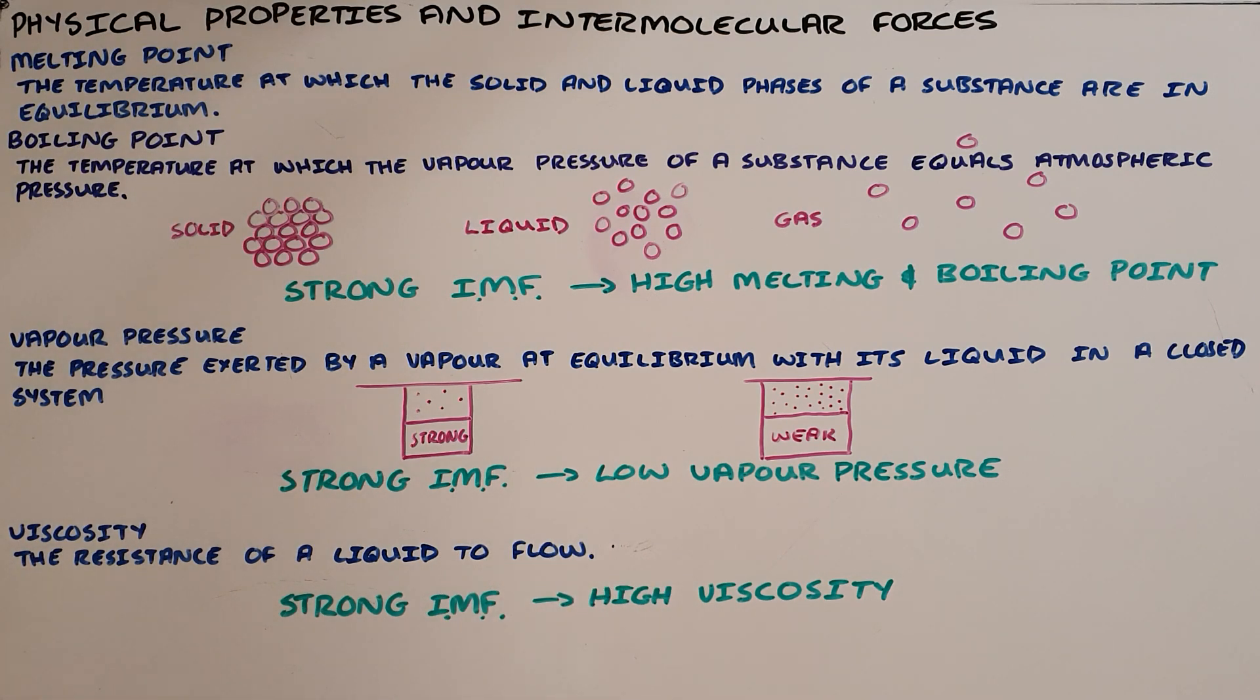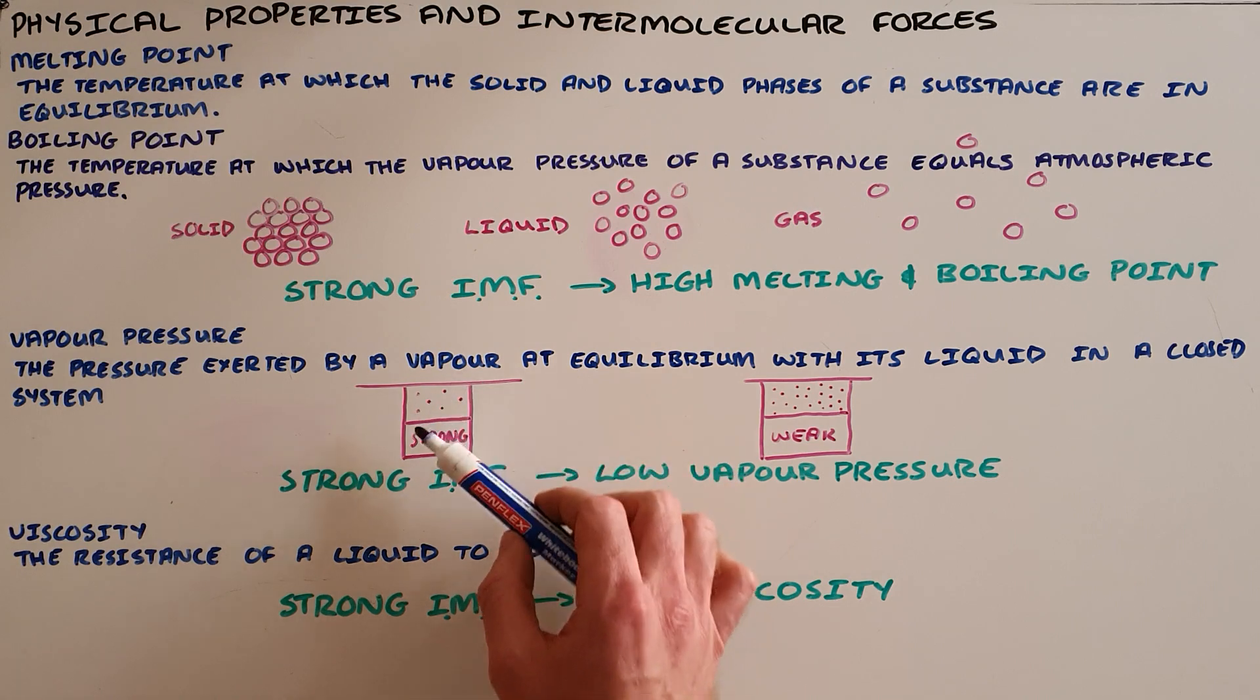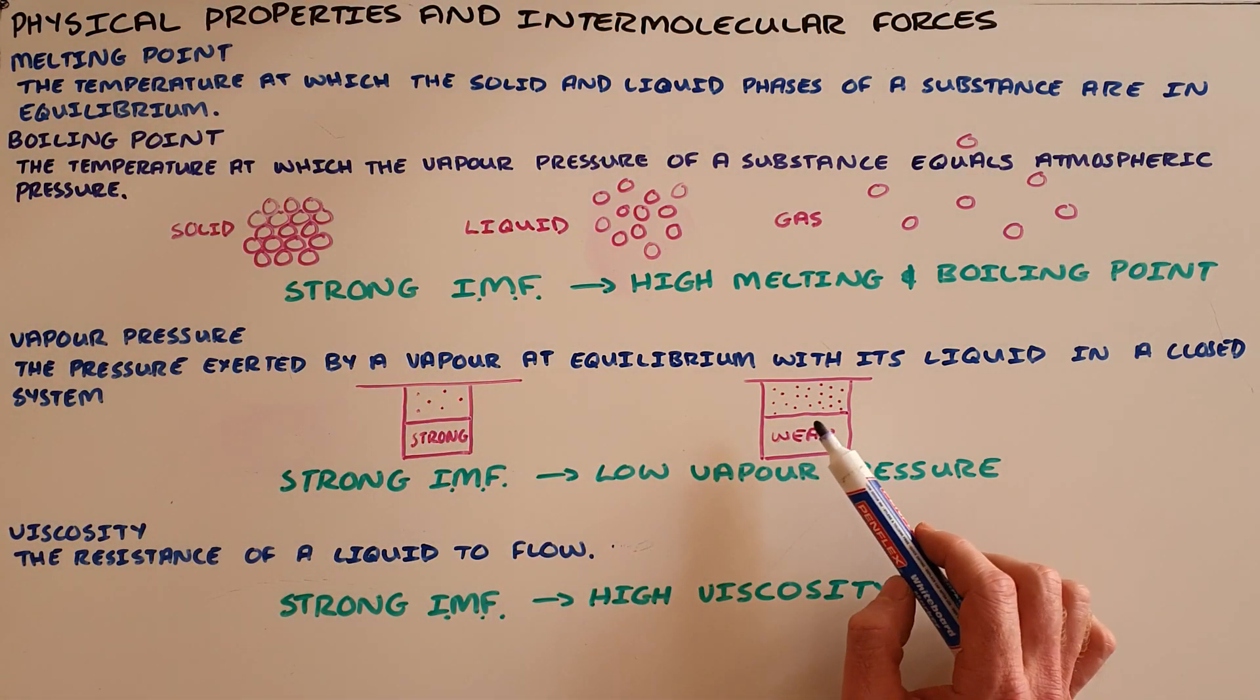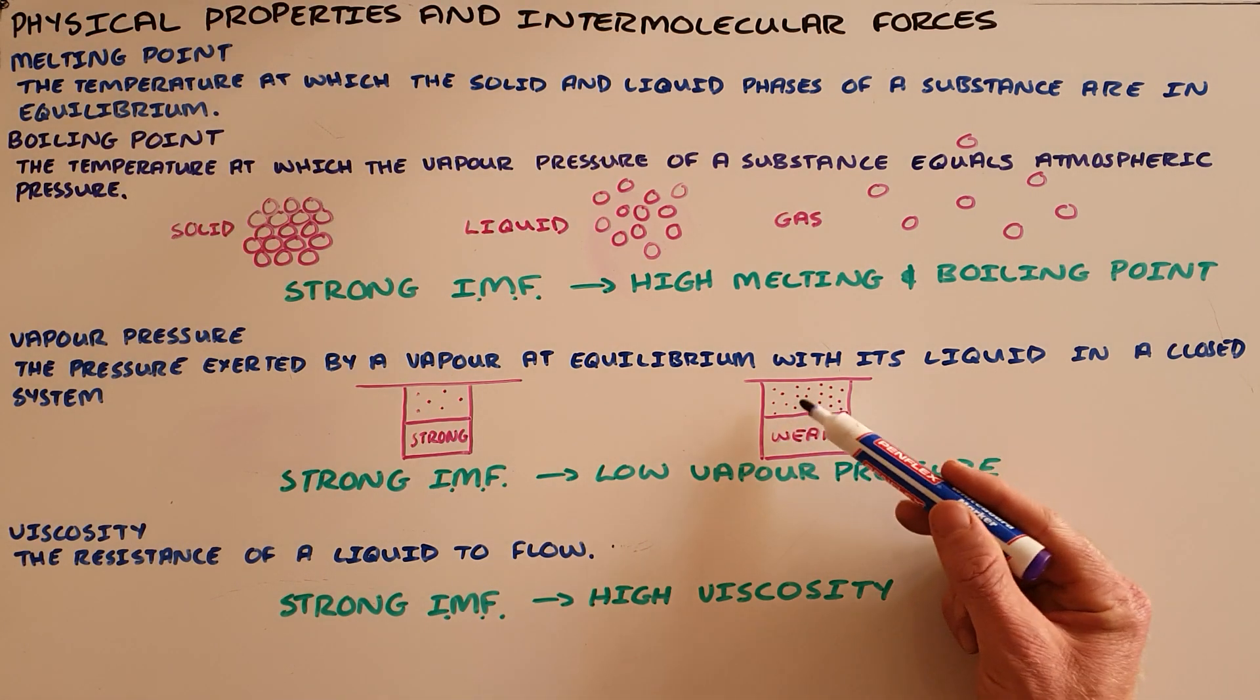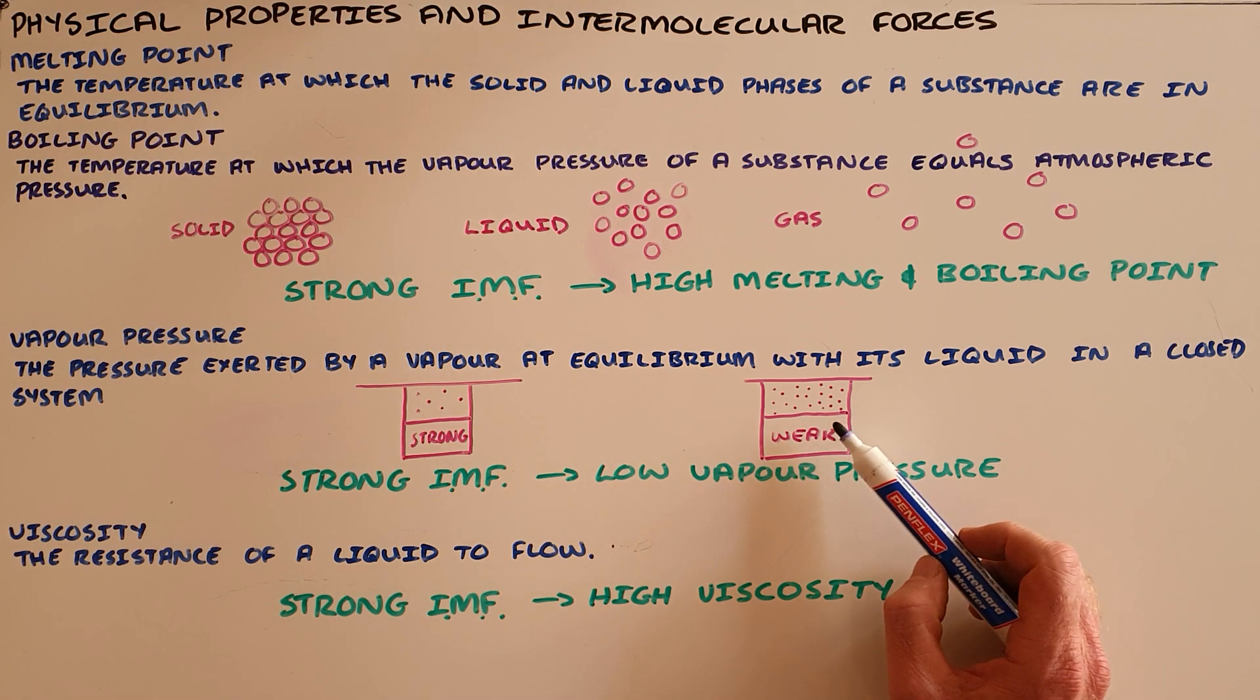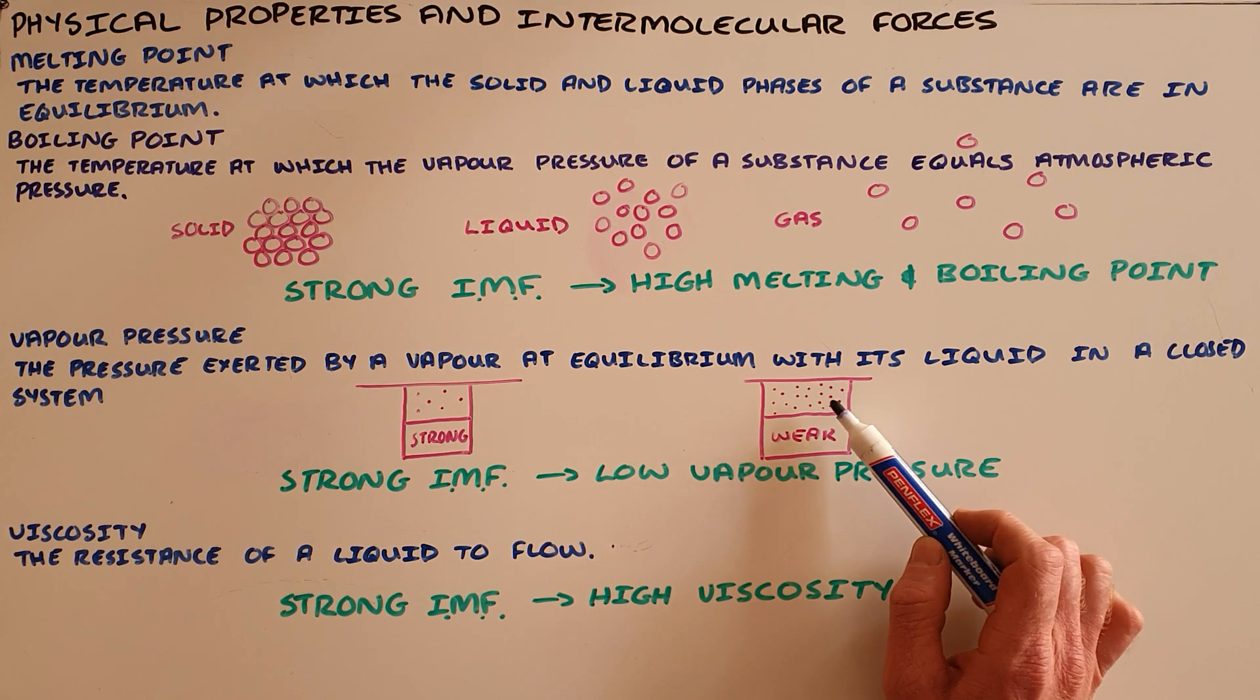Now, a substance that has strong intermolecular forces would not easily allow particles to escape, unlike a substance with weak intermolecular forces, where the particles are able to easily escape that liquid and become a gas. So what we find is that substances with weak intermolecular forces have more gas particles, and as a result, a higher vapor pressure.